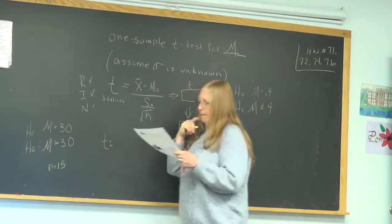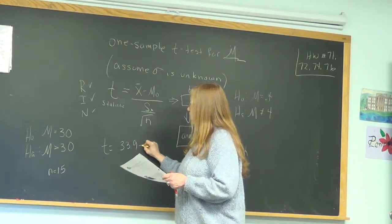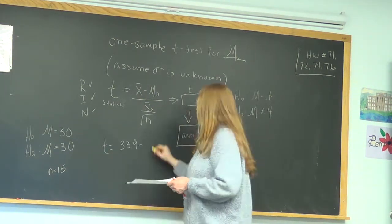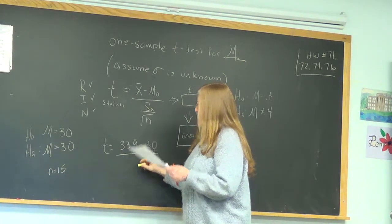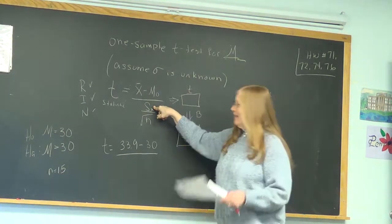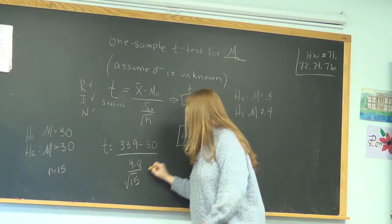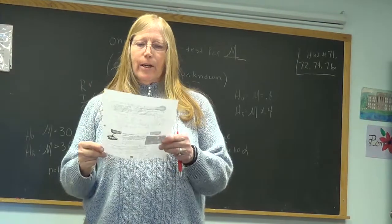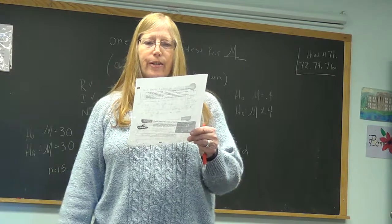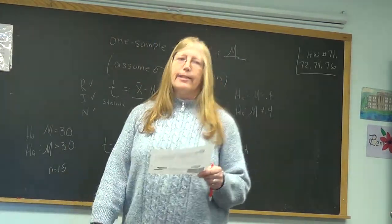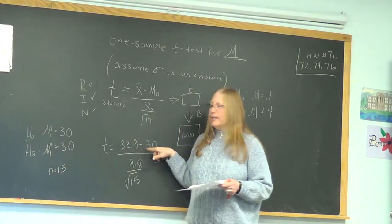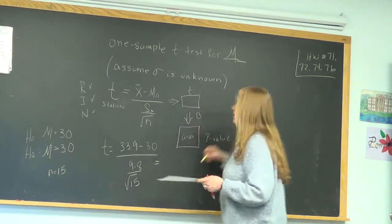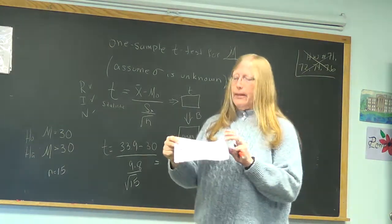So let's do it. t equals x bar, which is given in the problem, 33.9, minus μ naught. Remember, that comes from the null hypothesis. So that is your μ naught, like your p naught. Over S of X, and hopefully they gave us that. They did, 9.8, over square root of 15. See if you can, with your intuition, finish this Better Batteries for homework and see what you come up with. Then on the back, I want you to also do healthy streams.